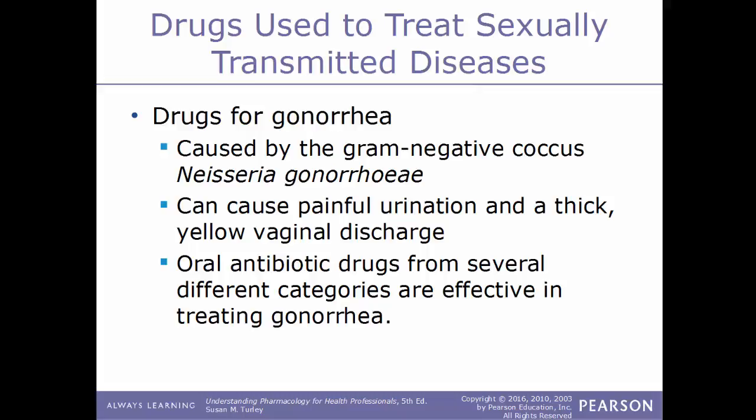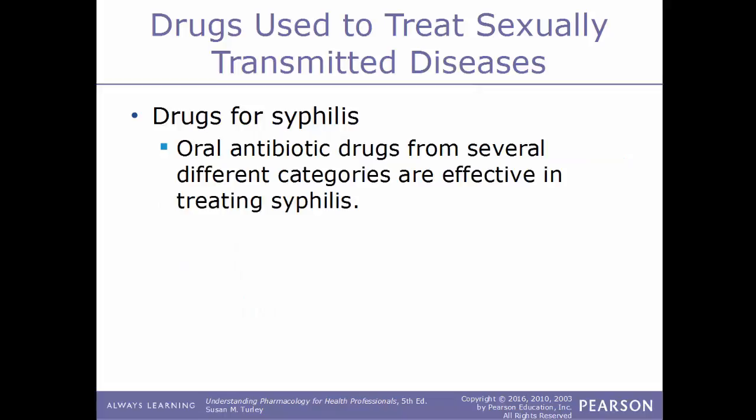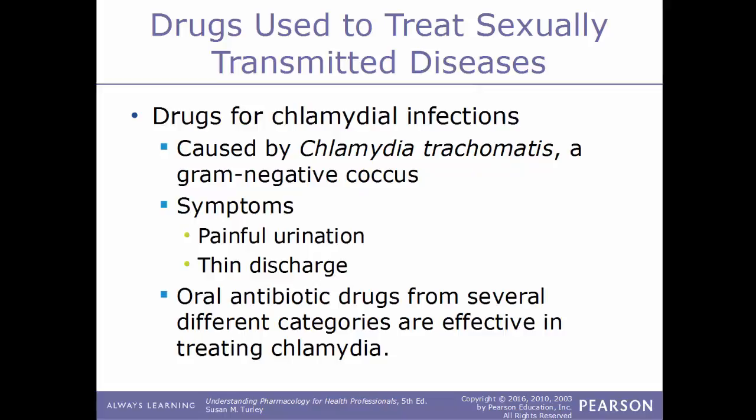Drugs used to treat STDs — sexually transmitted diseases. Gonorrhea is caused by the gram-negative coccus bacteria Neisseria gonorrhoeae, causing painful urination and a thick yellow discharge from the vagina. Syphilis is caused by the gram-negative spirochete Treponema pallidum and can cause fever, a rash with lesions in the genital areas that can ulcerate and form a crust, known as chancres. Chlamydia is caused by the gram-negative bacteria Chlamydia trachomatis, with symptoms of painful urination and a thin discharge. Oral antibiotic drugs from several different categories are effective in treating gonorrhea, syphilis, and chlamydia.